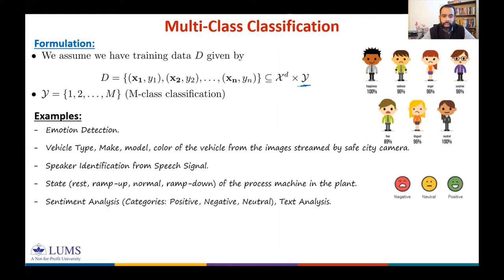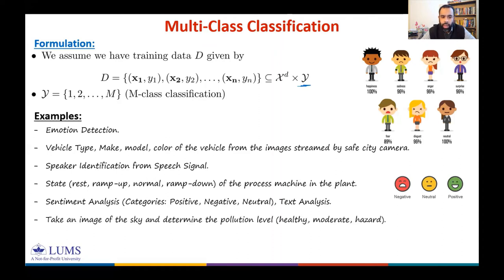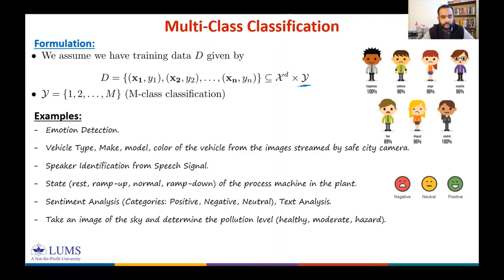Or you can have sentiment analysis or text analysis — again, multi-class classification. Another example: take an image of the sky and determine the pollution level — whether it is healthy, moderate, or hazardous. This is a three-class classification problem. In fact, this was a paper published at ICASSP 2018 in which they developed an application where you take a photo from your smartphone and the application can determine the air pollution level.